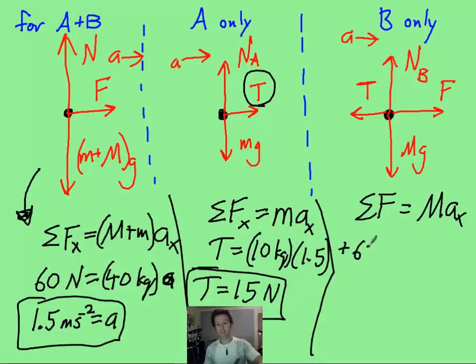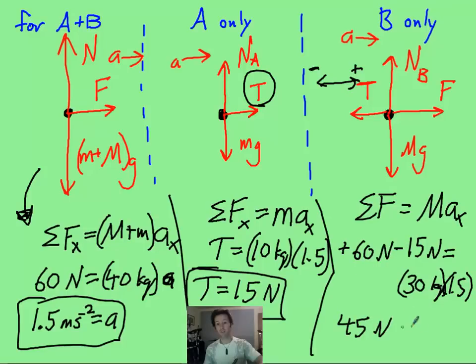We've got a positive 60 newton force, and I'm going to call the left the negative direction. So I'm going to say that we've got a negative tension of 15 because it's pointing backwards on the big block of 15 newtons. And that's going to equal the 30 kg times that same 1.5 meters per second squared acceleration. And we end up with 45 newtons equal to 45 newtons to confirm